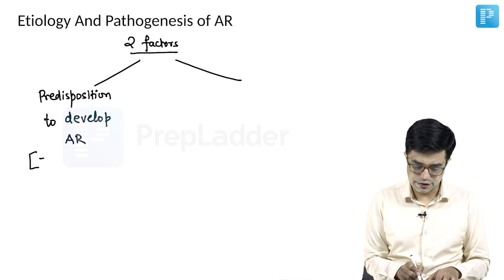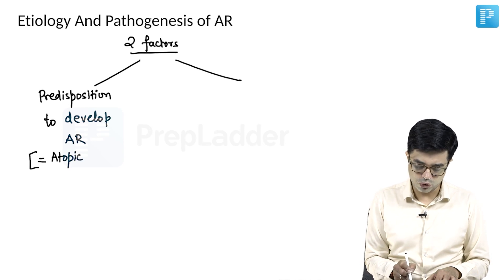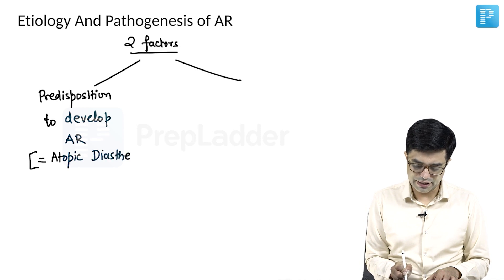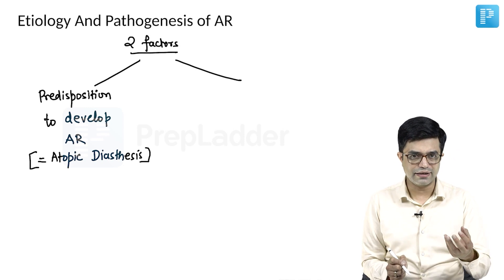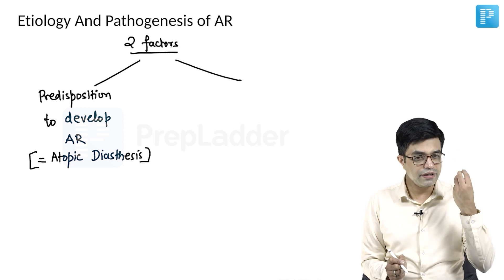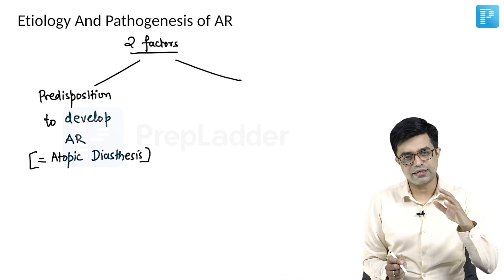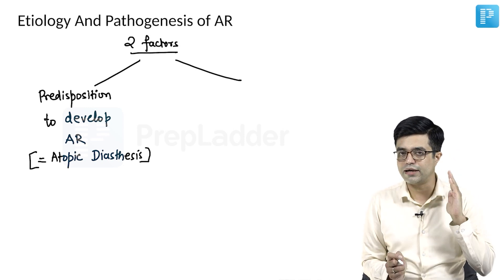In other words, the child should have what we call atopic diathesis. Atopic diathesis means the child has a propensity, tendency, genetic predisposition — the child will develop allergies.